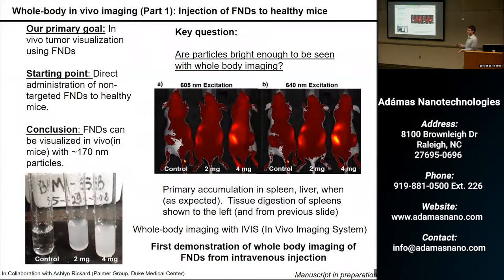The initial question we had was: can you actually visualize these particles in vivo with whole body imaging? That hadn't been done before, especially with an intravenous injection — it had been done with subcutaneous injections under the skin in mice, but not via intravenous injection. So we took these mice and injected them through the tail vein with increasing concentrations of approximately 170 nanometer particles and imaged them with IVIS — the in vivo imaging system — done at Duke University.